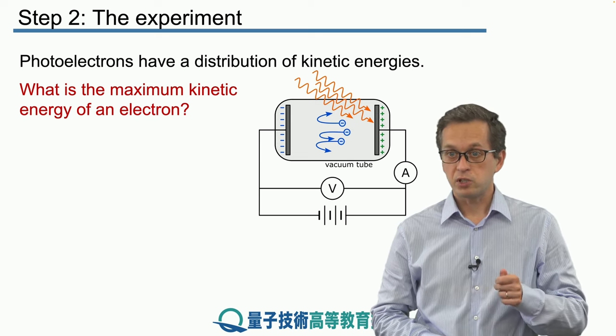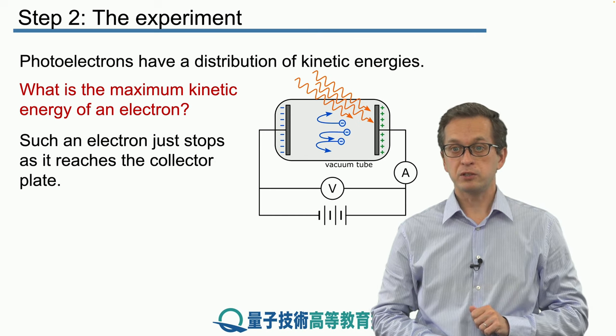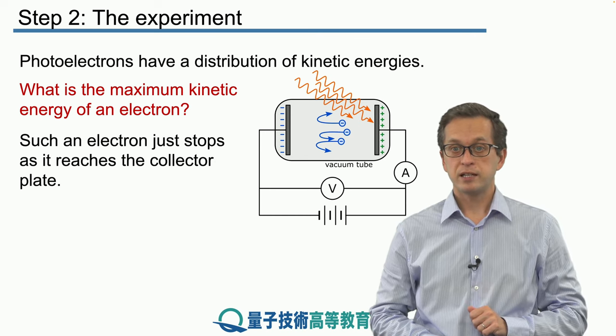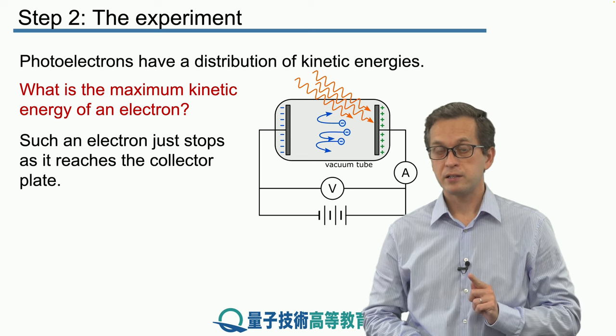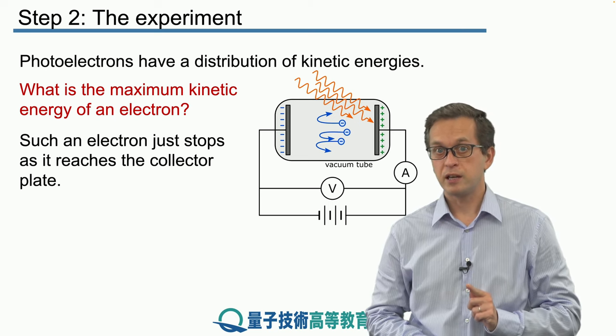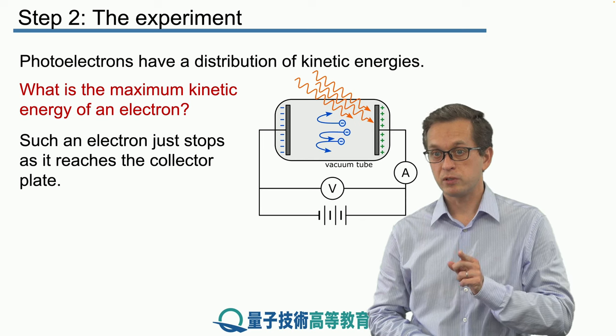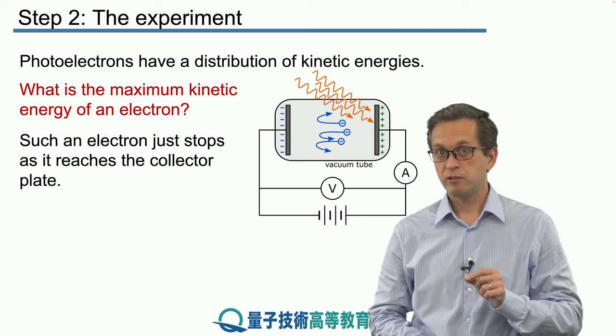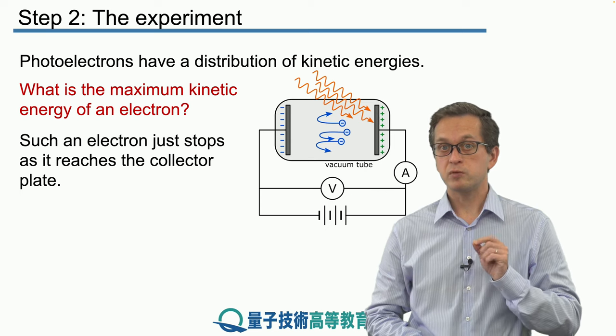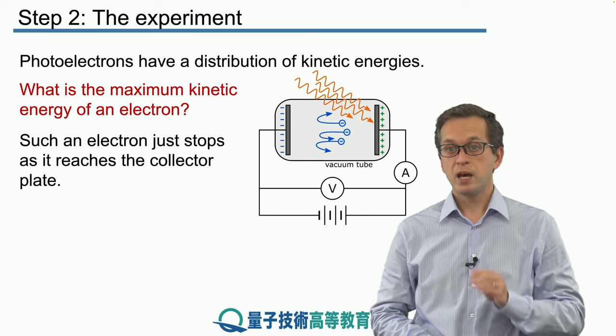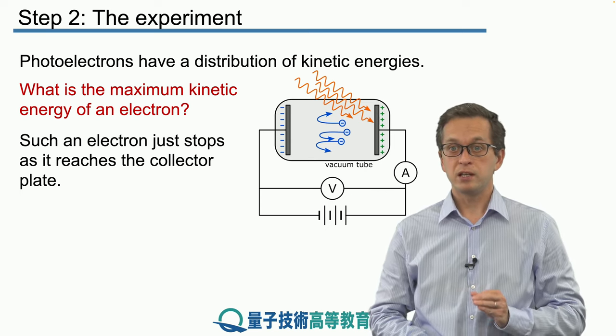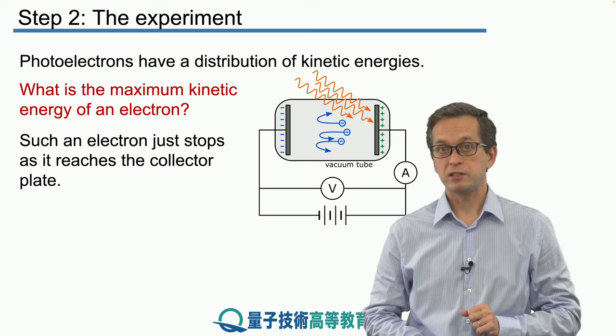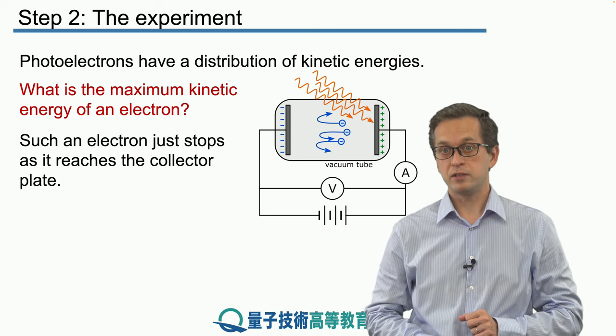He was adjusting the potential difference on the collector plates, such that the electron with the highest maximum kinetic energy was just about to be stopped by the negative plate. In other words, when his current measurements reached zero, he knew that's when all the electrons were being stopped, and the potential difference at that plate gave him a good estimate of the maximum kinetic energy of this distribution.